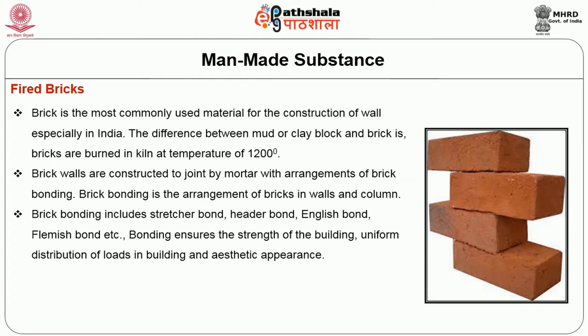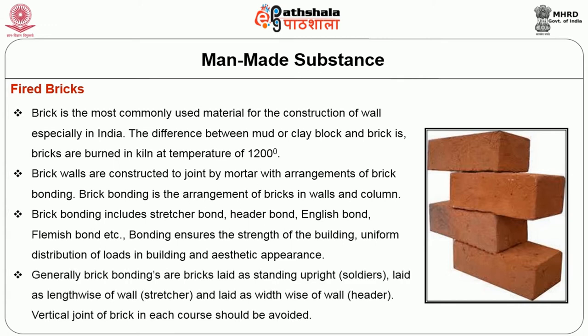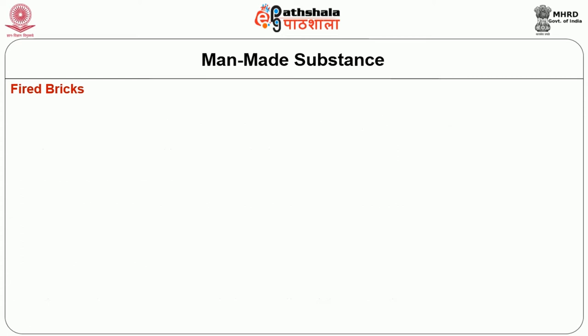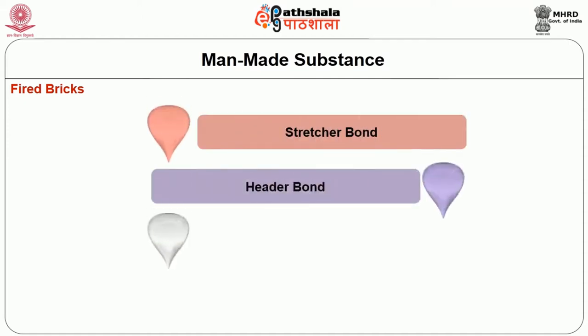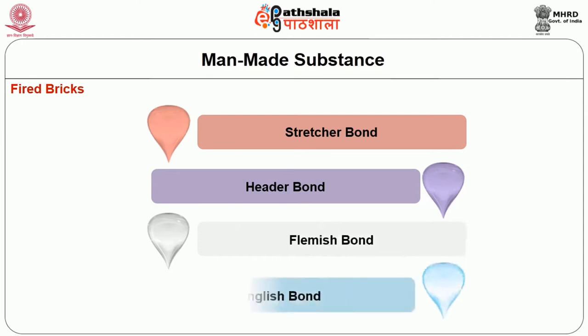Bonding ensures the strength of the building, uniform distribution of loads, and aesthetic appearance. Generally, bricks are laid as standing upright called a soldier, as lengthwise of wall called a stretcher, and as widthwise of wall called a header. Vertical joints of bricks in each course should be avoided. Different types of brick bond patterns include stretcher bond, header bond, Flemish bond and English bond.